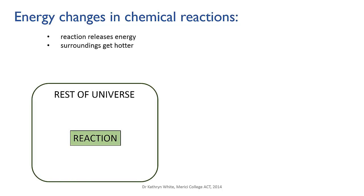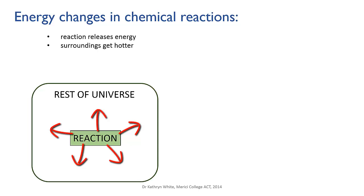If a chemical reaction releases energy, then as the reactants are turning into the products, energy flows from the reacting chemicals out into the surroundings, and this energy is now free to move through the rest of the universe. This energy usually takes the form of heat, so we detect the energy change by the surroundings getting hotter. Such a reaction is called exothermic — heat to the outside.